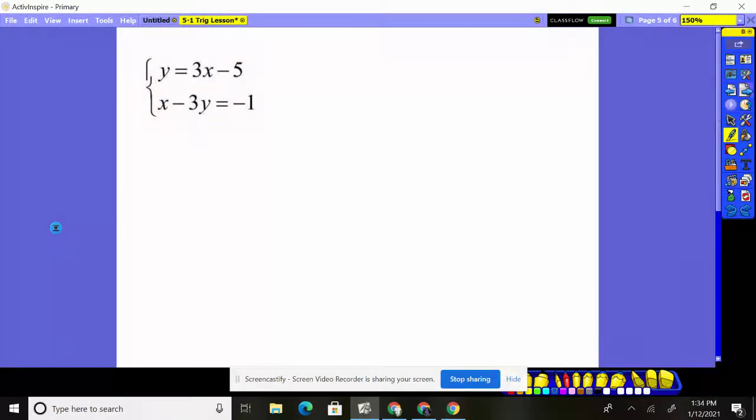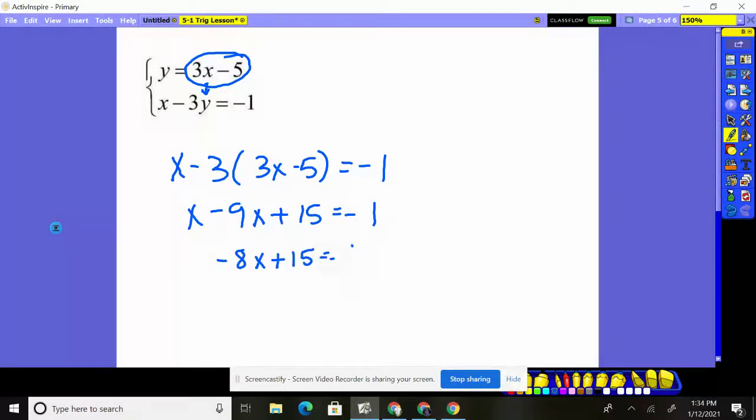System of equations. Starts off y equals. Boom. I'm going to use substitution. I'm going to plug 3x minus 5 into the y below. So we have x minus 3 times 3x minus 5. And that equals negative 1. I distribute my 3 through. That gives me negative 9x plus 15 equals negative 1. That gives me negative 8x plus 15 is negative 1. Subtract 15 from both sides. Negative 16 divided by negative 8 gives you positive 2. So x is positive 2.